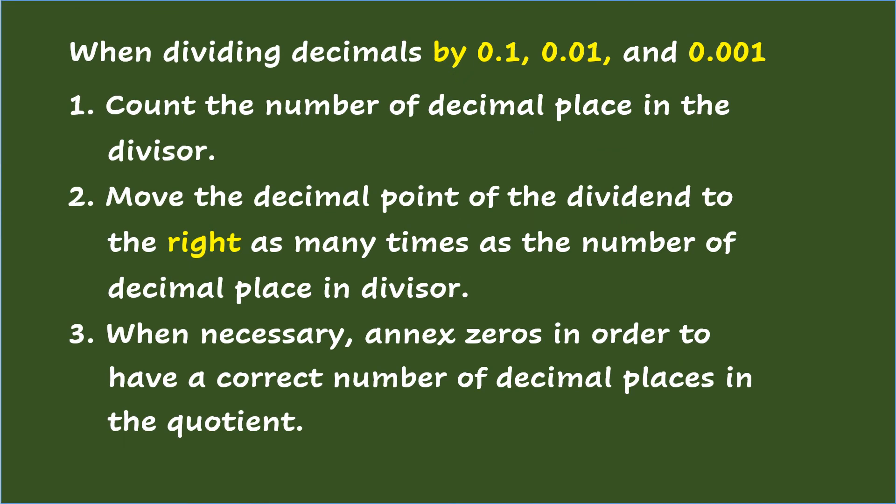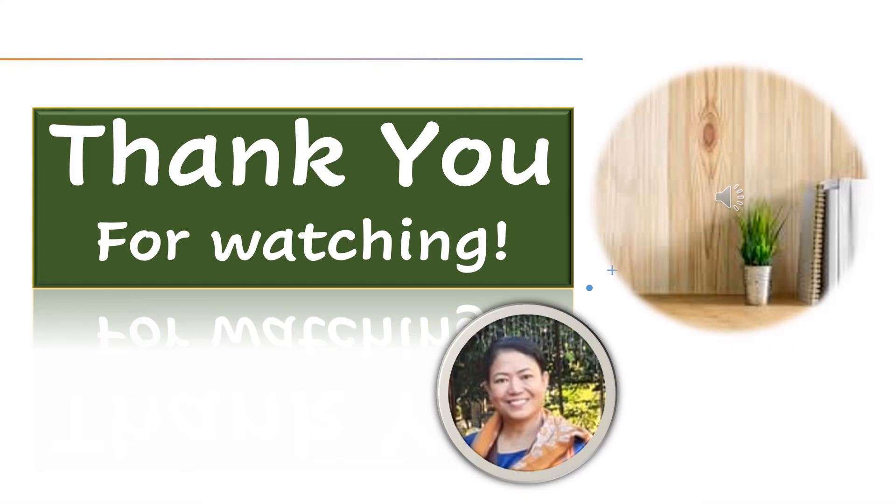When dividing decimals by one-tenth, one-hundredth, and one-thousandth, count the number of decimal places in the divisor. Move the decimal point of the dividend to the right as many times as the number of decimal places in the divisor. When necessary, annex zeros in order to have a correct number of decimal places in the quotient. Thank you all.